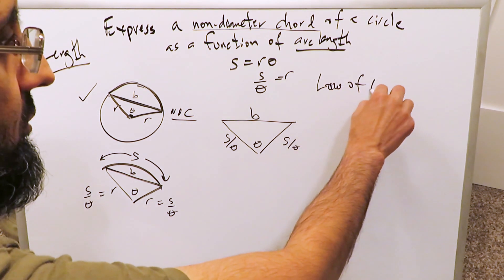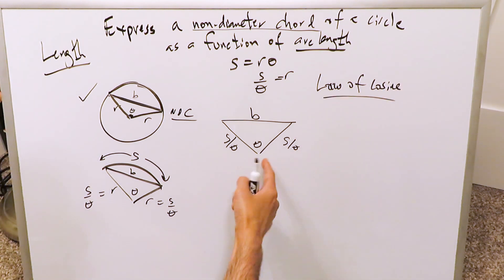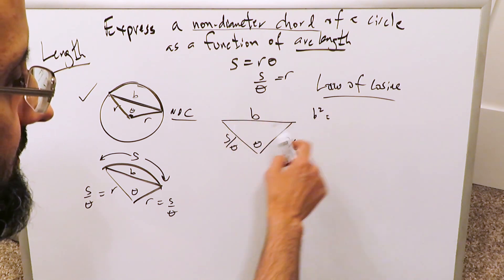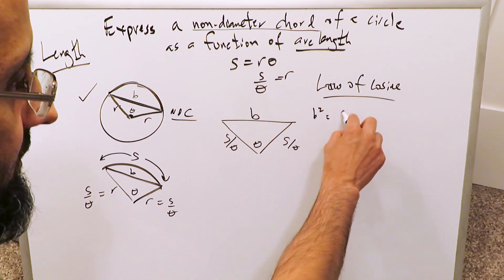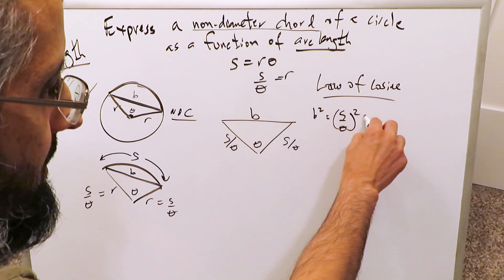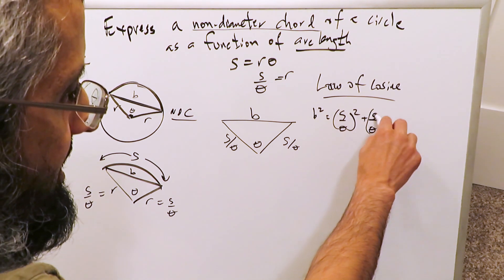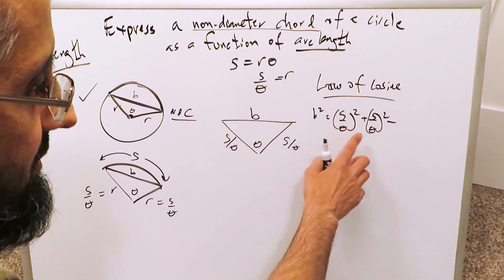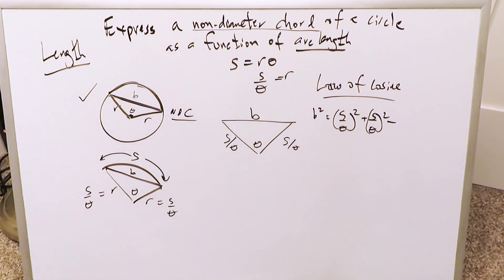You know you can do that. In this particular instance, you can do here B square, this side I'm trying to determine, is equal to this square plus this square. We'll call that S over theta square plus S over theta square minus. You're essentially saying B square is equal to A square plus C square minus 2AC cosine theta, the law of cosine.